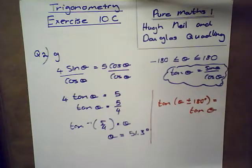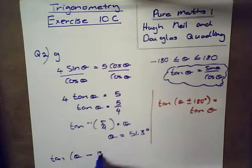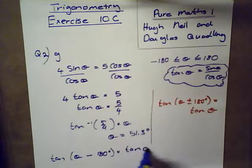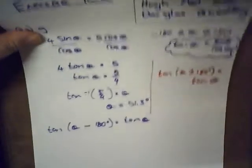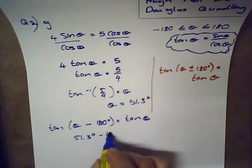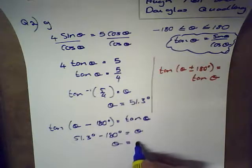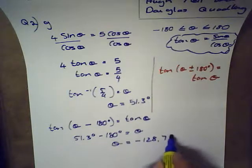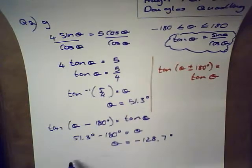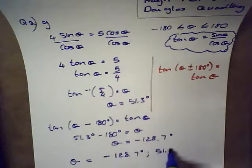Adding 180 degrees to 51.3 would put us outside the required interval, so instead I'll use subtraction: tan(theta minus 180 degrees) equals tan theta. That gives me 51.3 degrees minus 180 degrees equals theta, which is negative 128.7 degrees. So our final answers are theta equals negative 128.7 degrees and 51.3 degrees.